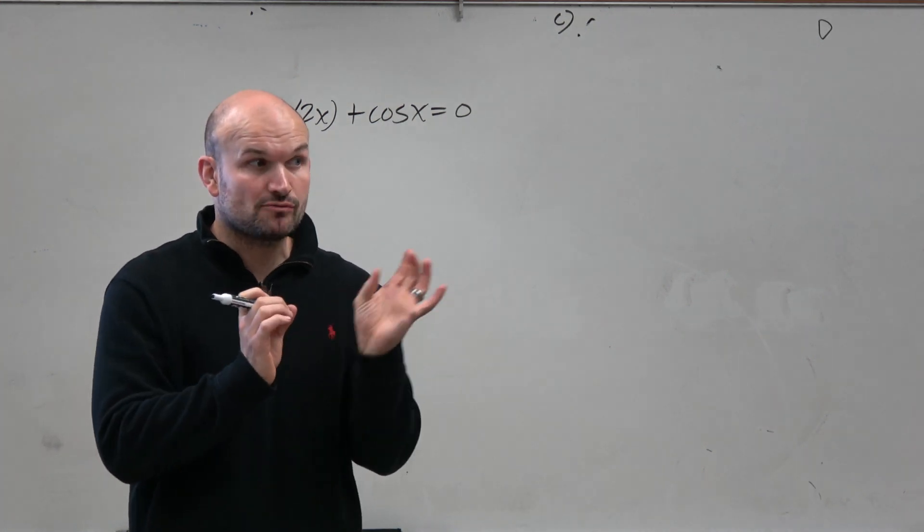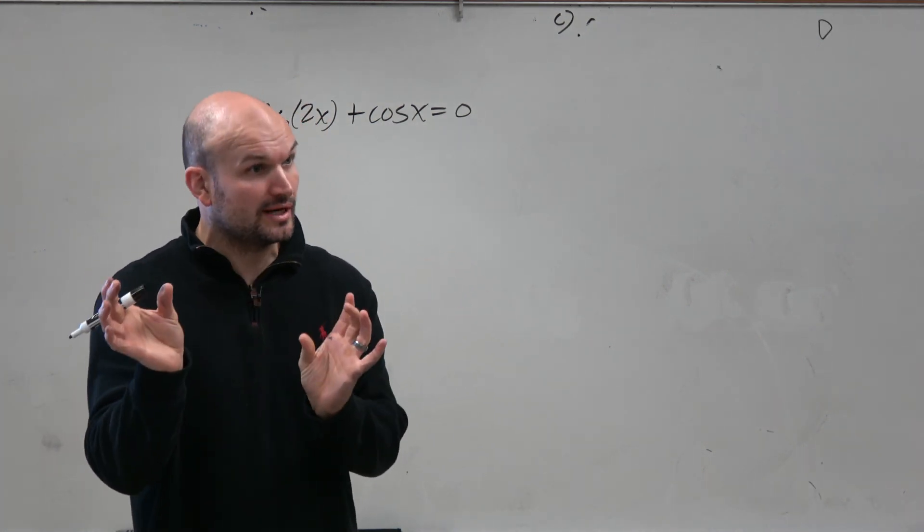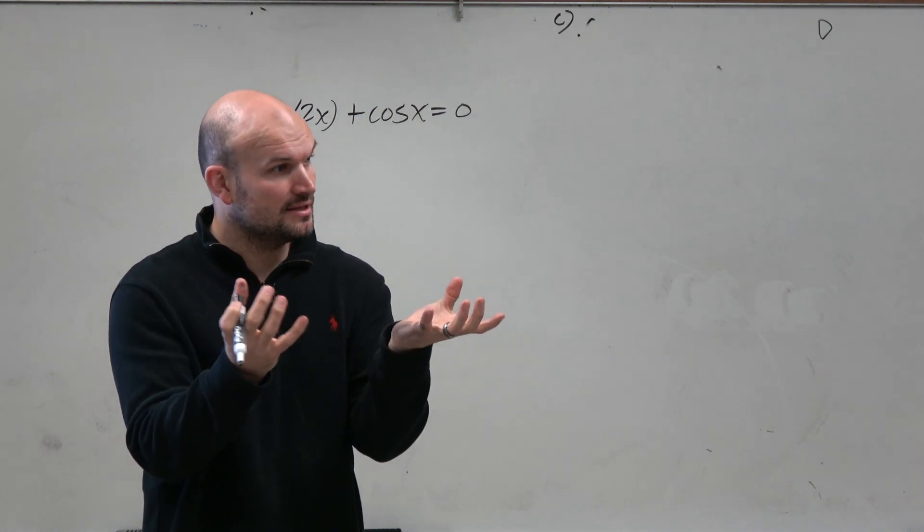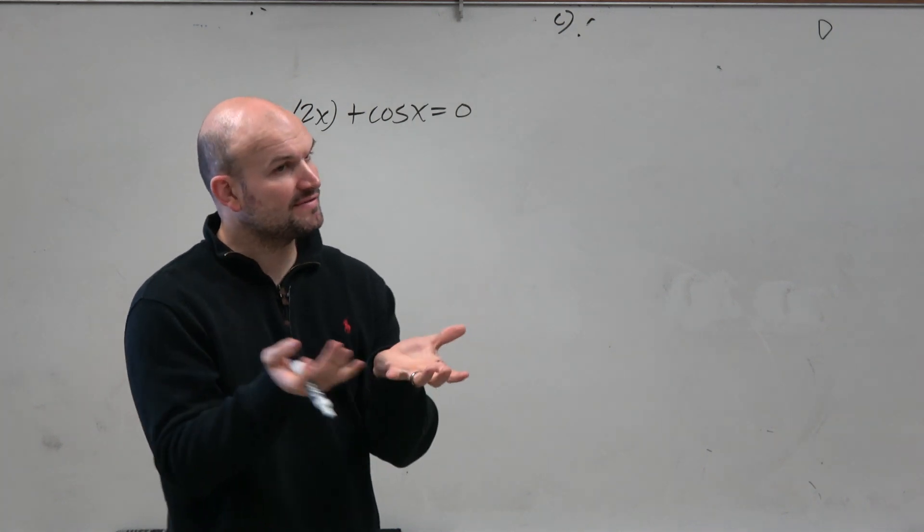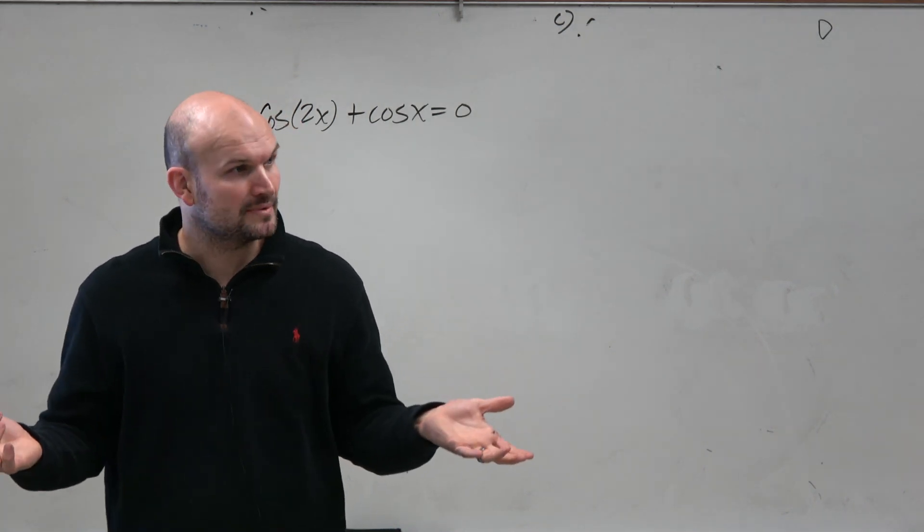It's like square roots. You can't add the square root of 2 plus the square root of 3. The arguments are different. Same thing with trig functions. They're not the same, even though they're both cosine. They don't have the same arguments, so we can't combine them.